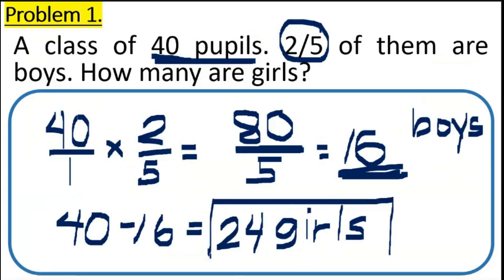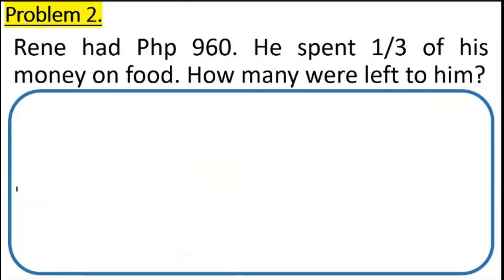In order to find out or to check if our answer is correct, you need to add 24 plus 16. So, 24 plus 16, that is 40. And that satisfies the equation that we have 40 pupils in our class. So, that is the answer for problem number 1. Next, let's solve problem number 2.